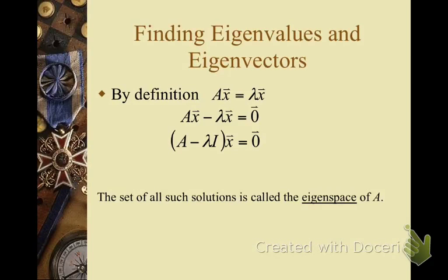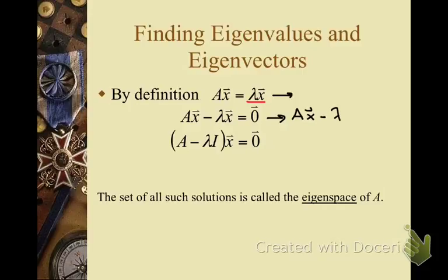On this slide we are going to talk about how you find the eigenvectors of a matrix A. We start with the equation A times x equals lambda times x, then subtract lambda x from both sides, giving us A times x minus lambda times x equals 0. We can rewrite this as Ax minus lambda I times x equals the zero vector.